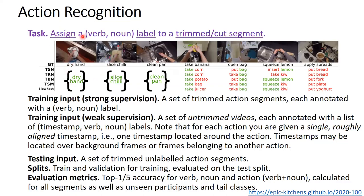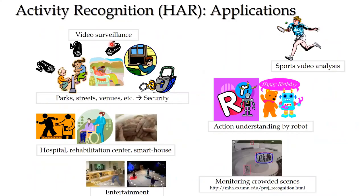In action recognition, a verb describes what the person is doing and a noun refers to the object itself. Action recognition has many applications: video surveillance, hospitals and rehabilitation centers, entertainment, crowded scene analysis, sports video analysis — where huge efforts and money are invested — and action understanding by robots, which can help human beings.